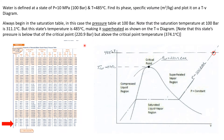Let's look at the next problem. Water is at a state of 10 megapascals, which is 100 bar, and its temperature is 485 degrees C. We want to find its phase, its specific volume, and plot it on a TV diagram.